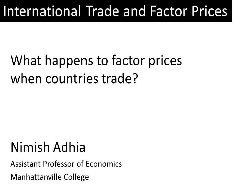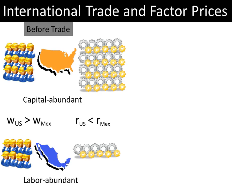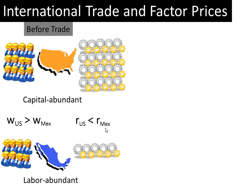What happens to factor prices when countries trade? I'm going to explain this with an example used in the previous video on factor prices and factor endowments. There were two countries in that video: the U.S. and Mexico. The U.S. was a capital abundant country, Mexico labor abundant. As a result, wages were high in the U.S. compared to wages in Mexico, and the real interest on capital was higher in Mexico than in the U.S. This was before the countries engaged in any kind of trade.